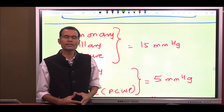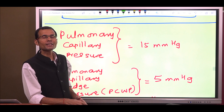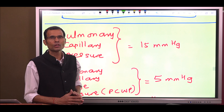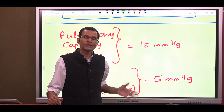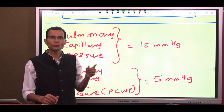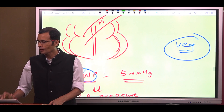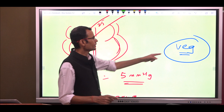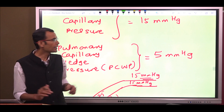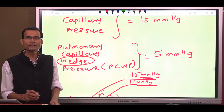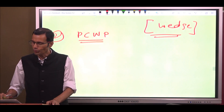A student of medicine came with this doubt: there is pulmonary capillary pressure and there is pulmonary capillary wedge pressure — what are these two different pressures and how are they different? The student had written 'pulmonary capillary wedge' incorrectly in his notebook, which had to be corrected. It is pulmonary capillary wedge pressure, as if creating a wedge between the two sides.